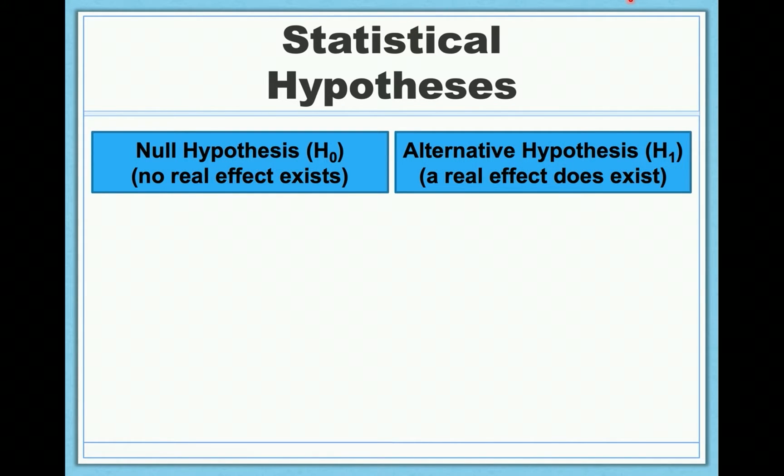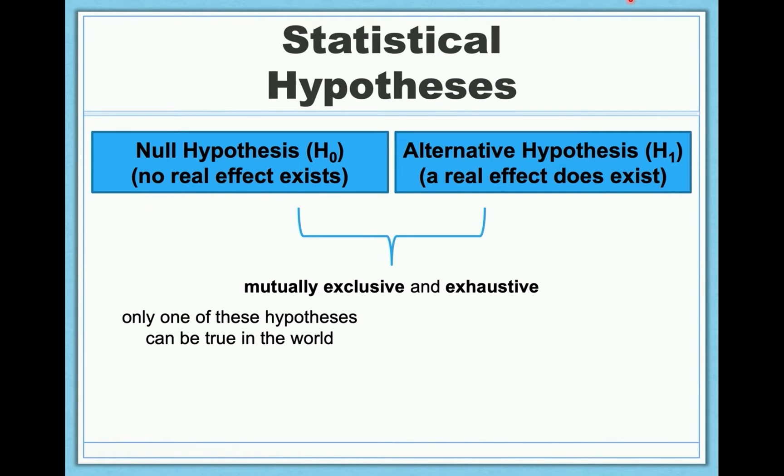So we can say it like this then. The null says no real effect exists. The alternative says a real effect does exist. And there's a reason we frame our hypotheses this way. It's really important to have the two flip sides because these two hypotheses taken together are mutually exclusive and exhaustive. Mutually exclusive meaning one of these hypotheses can be true. It can't be both. It's either one or the other. And exhaustive meaning that these two hypotheses together cover all possibilities. So one of these hypotheses must be true in the world. Either no real effect exists or there is a real effect. There's no third option and it can't be both.